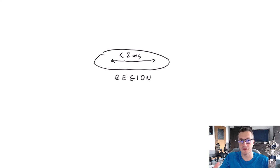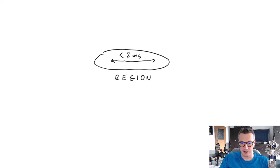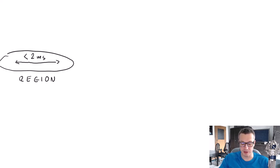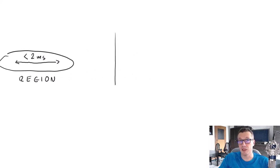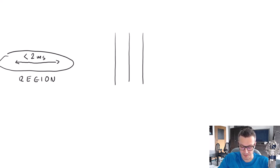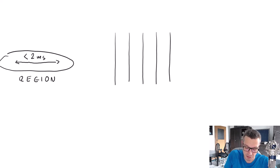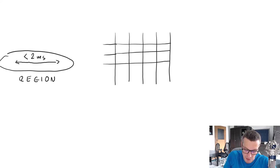What Microsoft guarantees is that the latency within a region will be less than two milliseconds. That latency boundary is what defines a region. We have multiple regions around the world in different continents and countries, and the latency between them will vary depending on the distance between those regions.